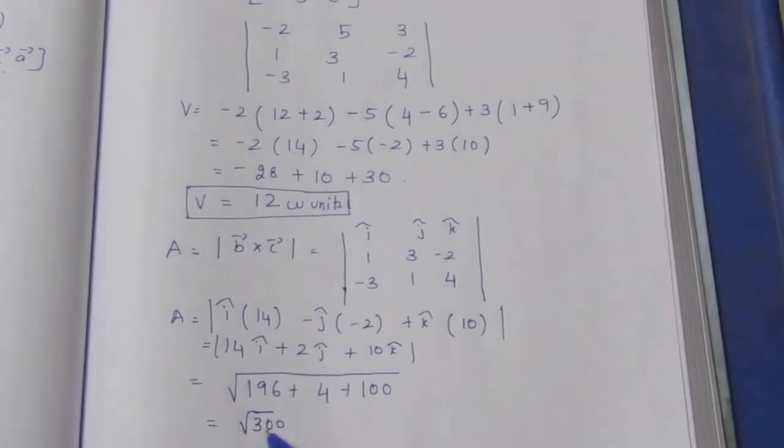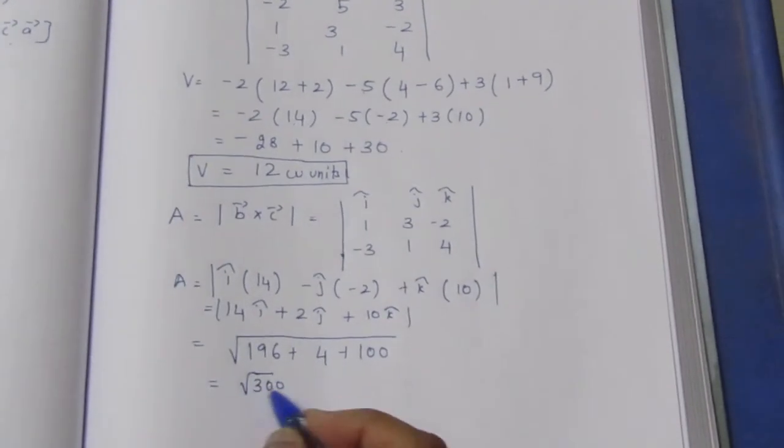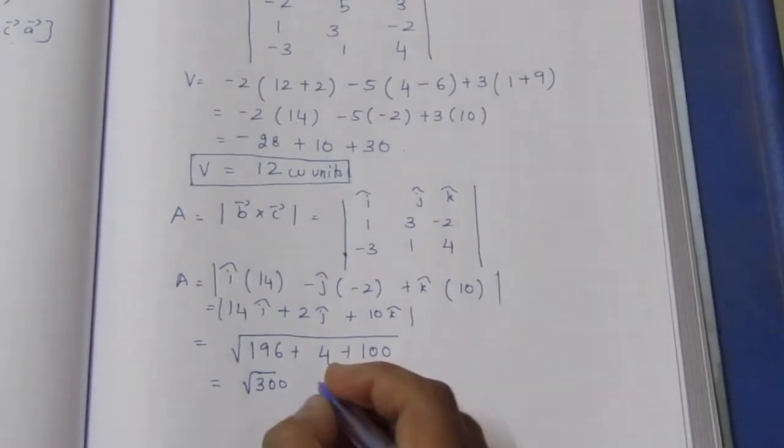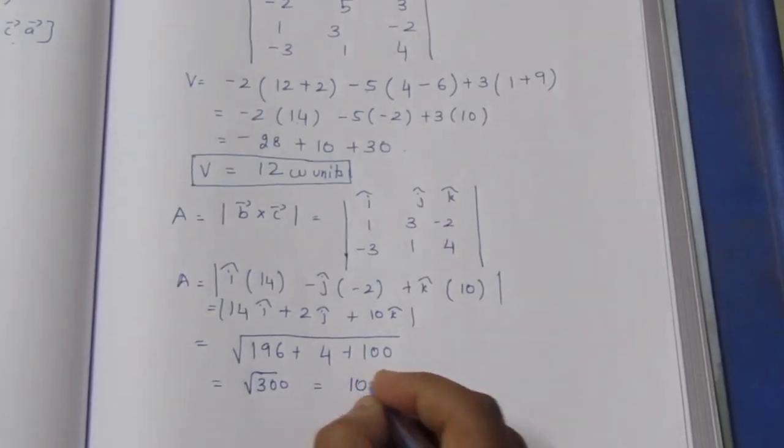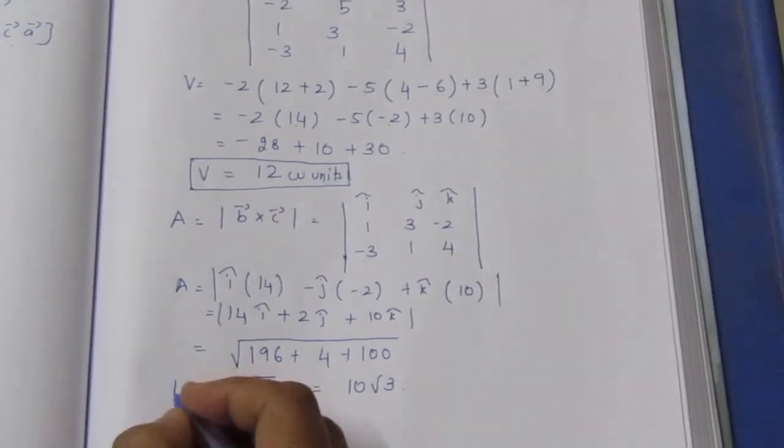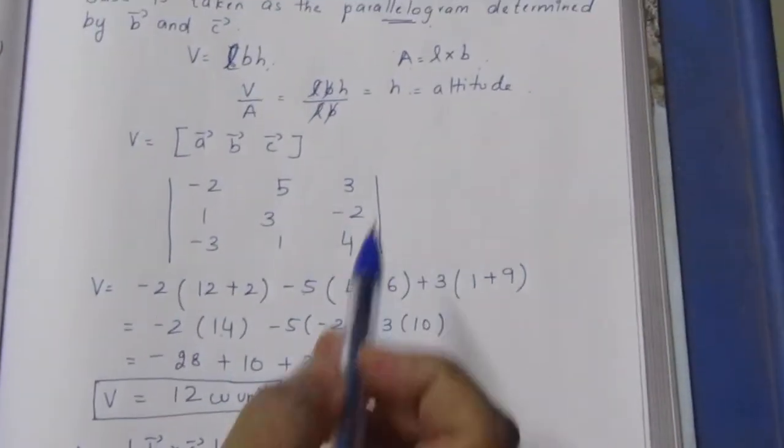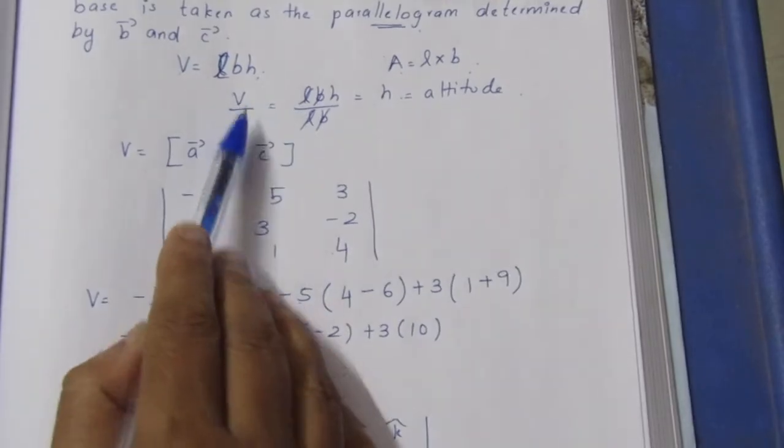√300 equals √(3×100) = 10√3. This is the area of the parallelogram base.